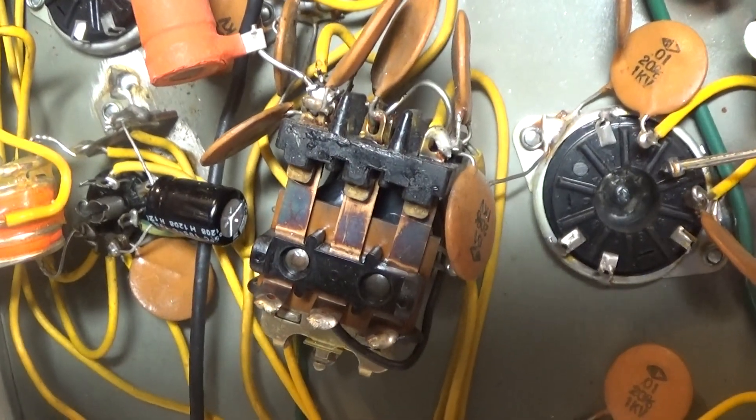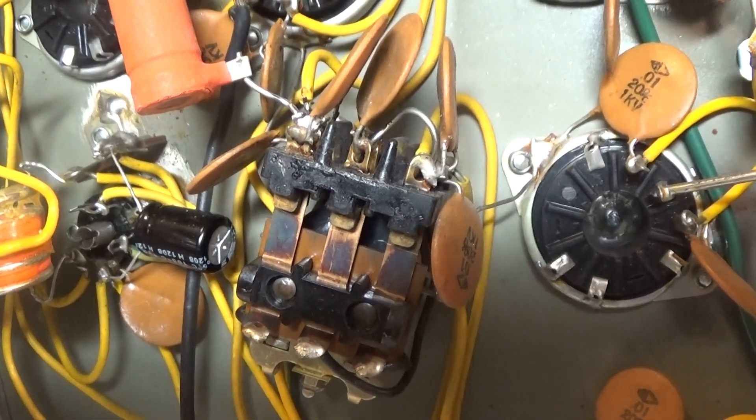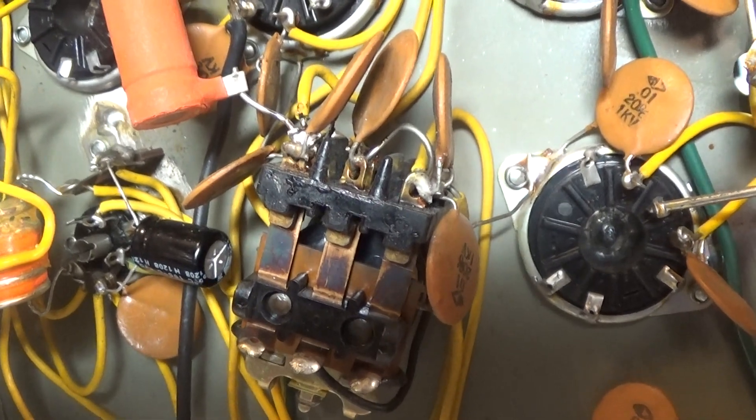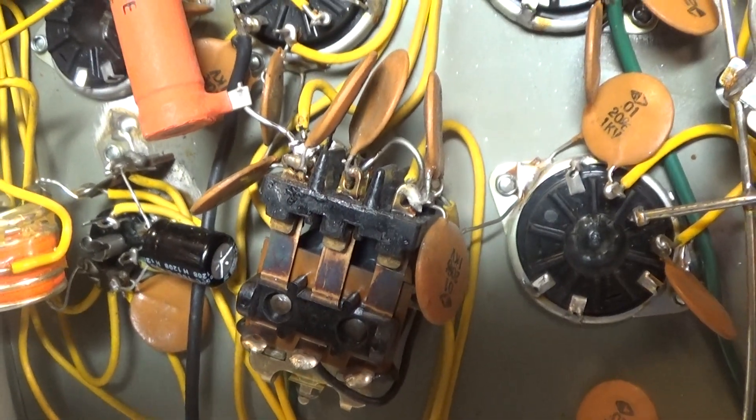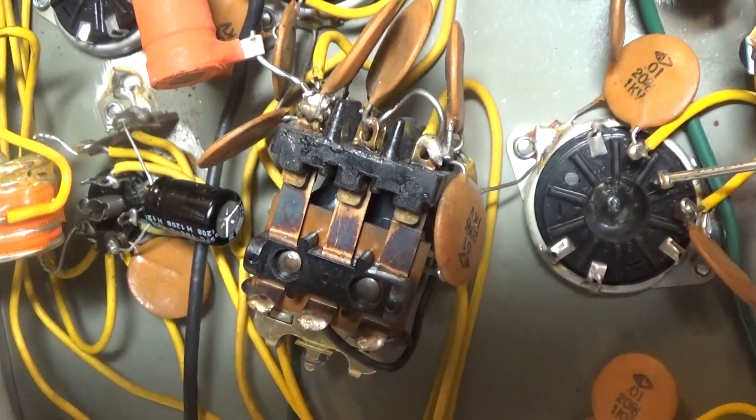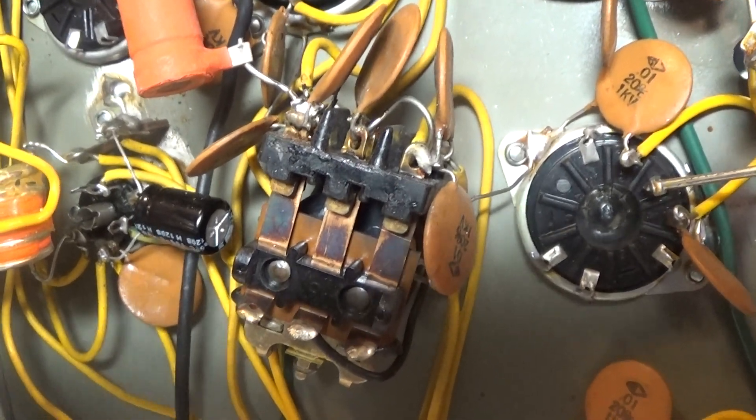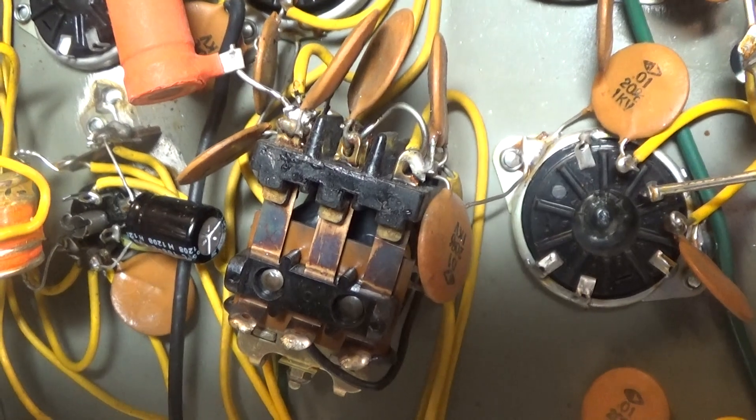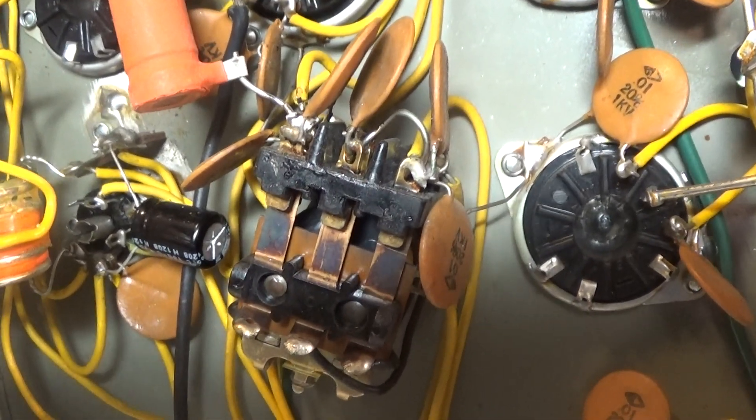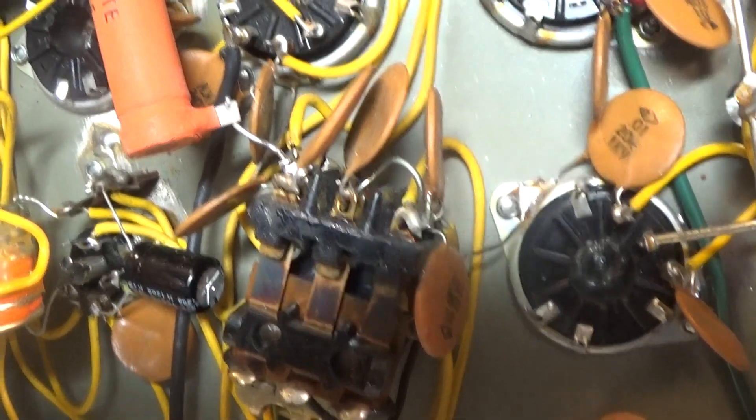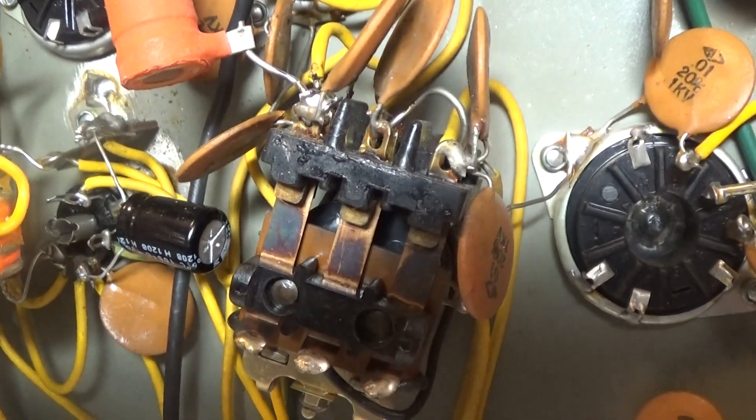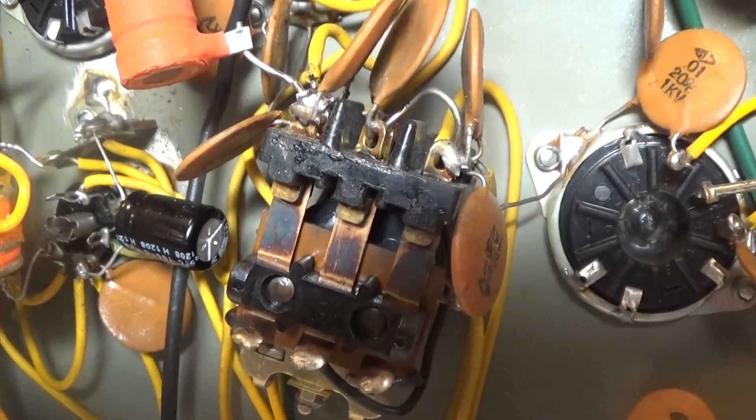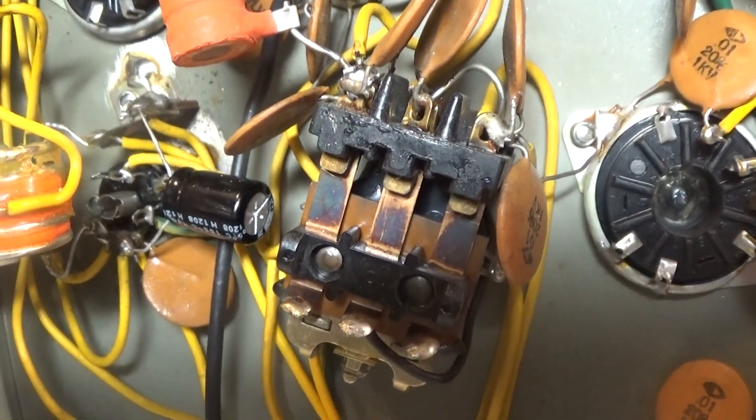I've got another relay down here and that's the B+ relay or high voltage relay. That relay only kicks in when you key down, so the tubes are at rest with really no high voltage or power going to them when you are not keyed down or in standby. But when you key down, that relay kicks in and takes the high voltage and puts it on top of the tubes.